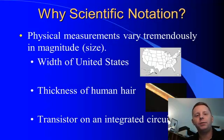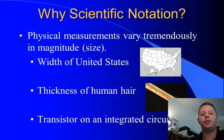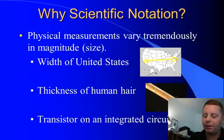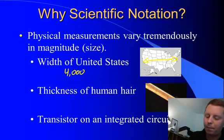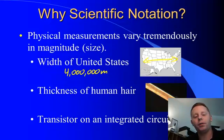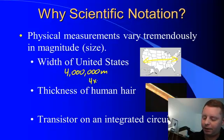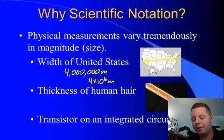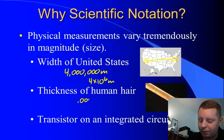Why use scientific notation? Well, in physics, the magnitude or size of measurements can vary tremendously from very large values. Say the width of the United States, for example, is about four million meters across from New York to San Francisco, which we would write more efficiently as 4 times 10 to the 6 meters, down to something as small as the thickness of a human hair, which is about a hundred microns or 0.0001 meters, which we could write as 1 times 10 to the minus 4 meters.